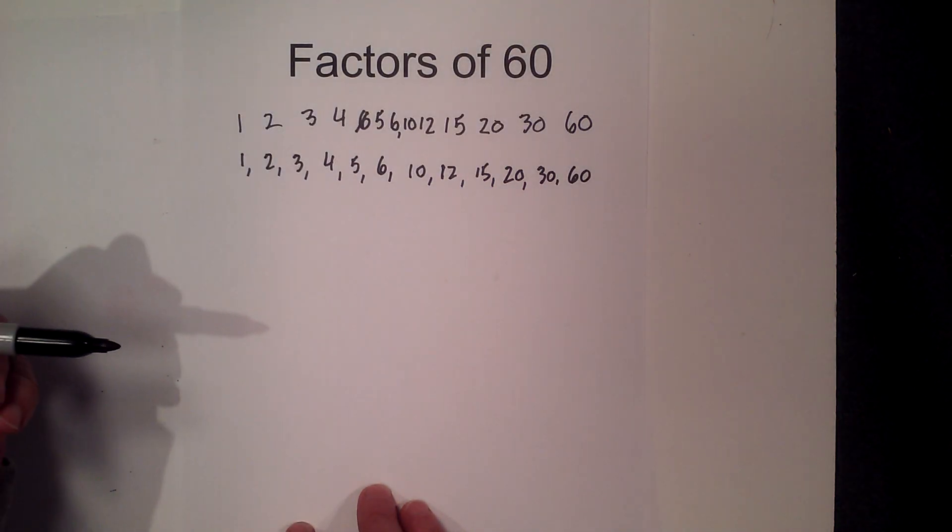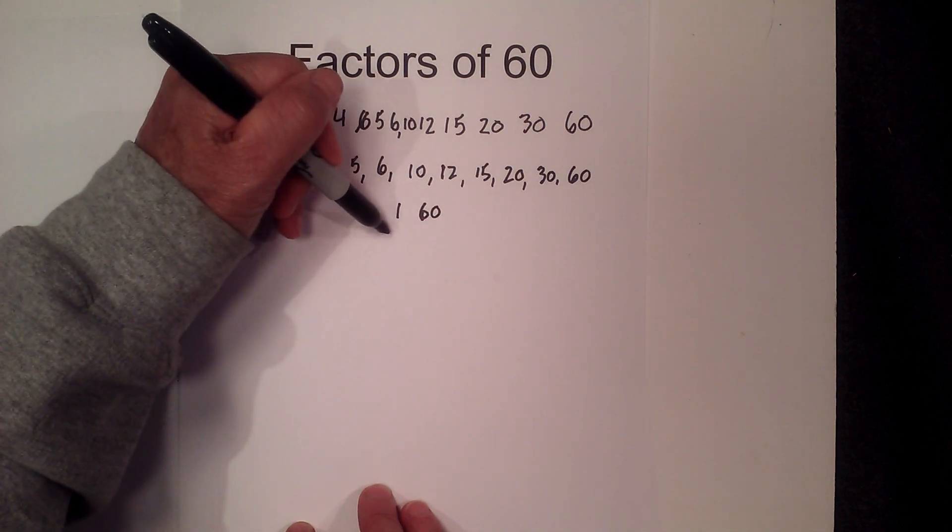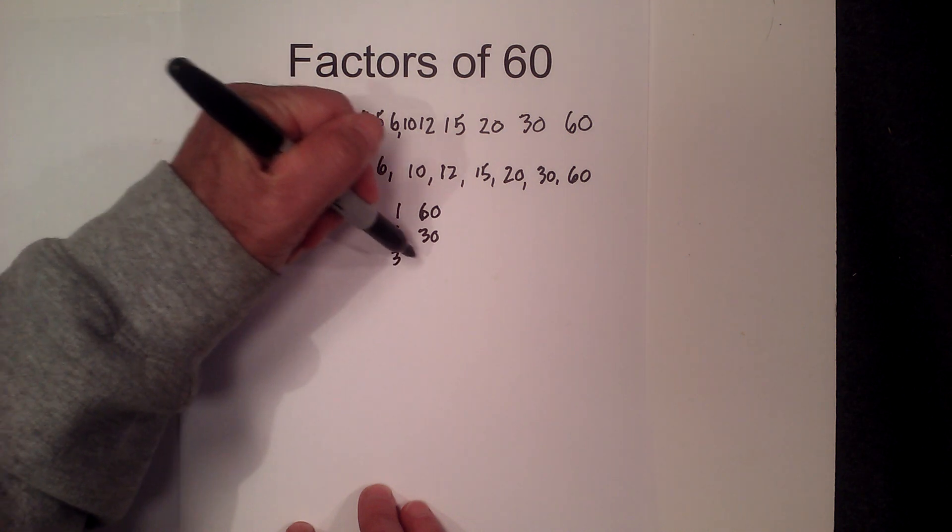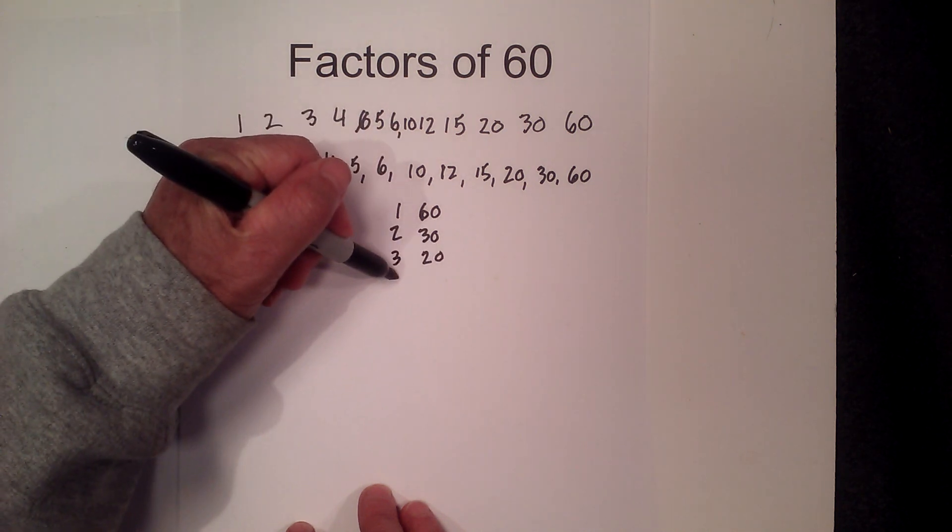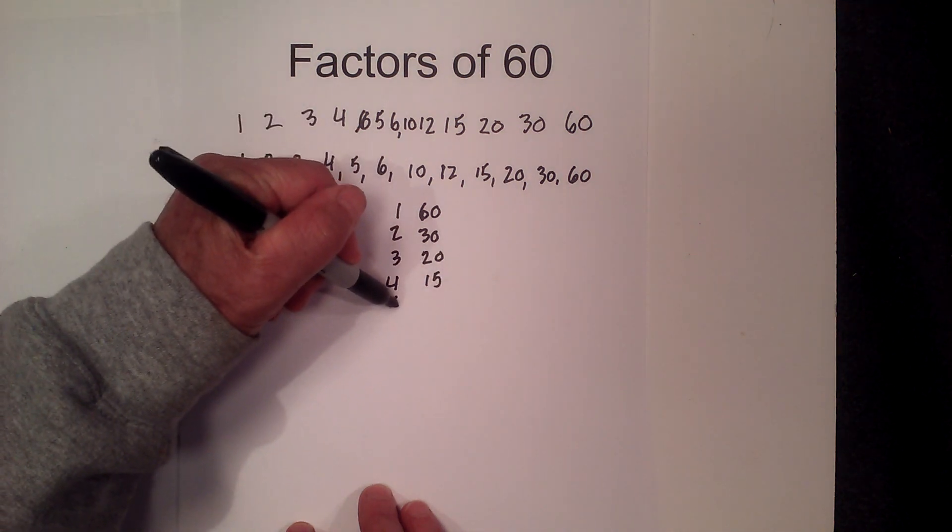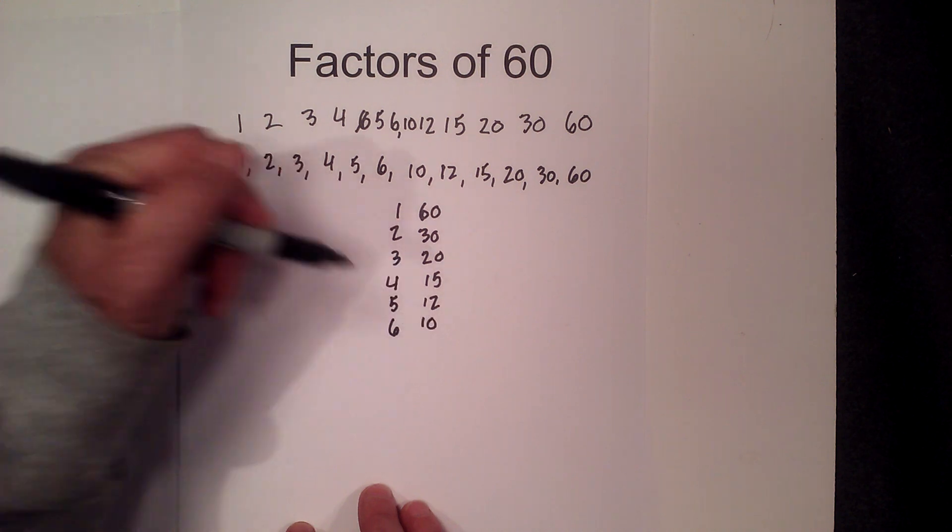And if you want to know the pairs, they are 1 times 60, 2 times 30, 3 times 20, 4 times 15, 5 times 12, and 6 times 10.